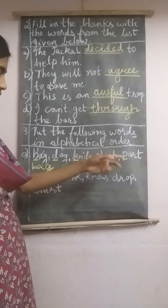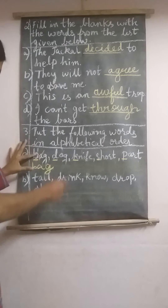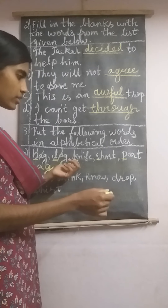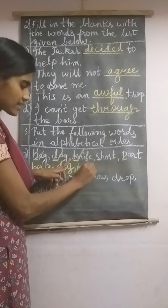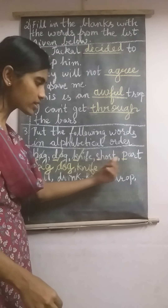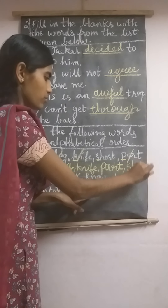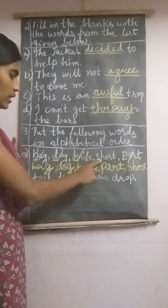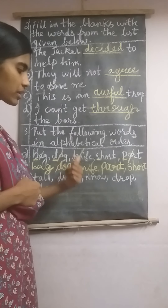Now moving on: after B, C is not there, D is there — so write 'dog.' After D, going through E, F, G, H, I, J — K is there, so the word with K is 'knife.' Then after K, going L, M, N, O, P — P is there, so write 'part.' Then at last we have S — 'short.' The arranged order is: bad, dog, knife, part, short.